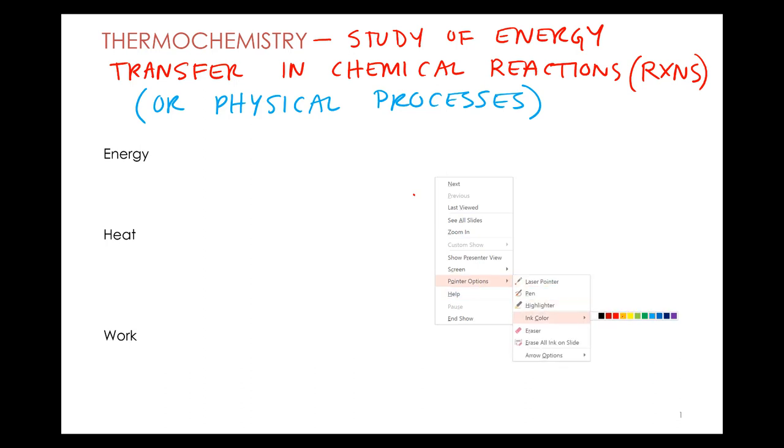So one thing we have to define is energy. If we're going to talk about energy transfer of chemical reactions or physical processes, we have to define energy. And so if you looked up energy in a dictionary, or googled energy or Bing, Yahoo energy, it would tell you the energy is the capacity to do work.